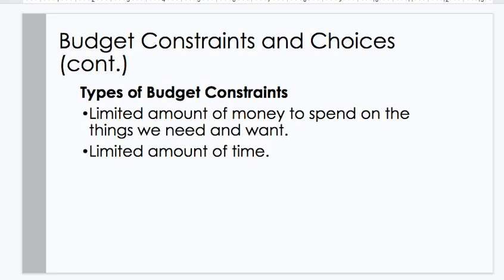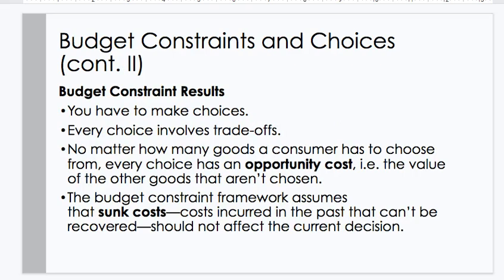Budget constraint and choices continued. Types of budget constraints: a limited amount of money to spend on the things we need and want, and a limited amount of time. Budget constraint results: you have to make choices. Every choice involves trade-offs. No matter how many goods a consumer has to choose from, every choice has an opportunity cost — the value of the other goods that aren't chosen. The budget constraint framework assumes that sunk costs, costs incurred in the past that can't be recovered, should not affect current decision-making.